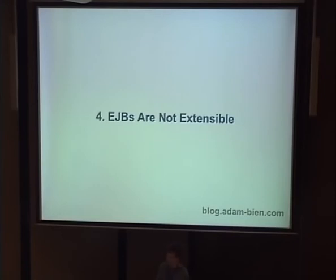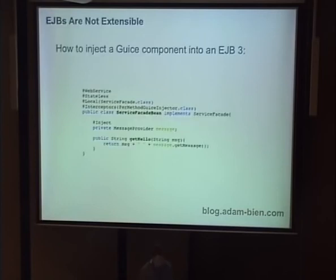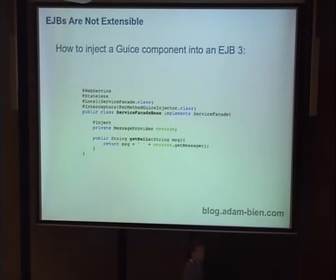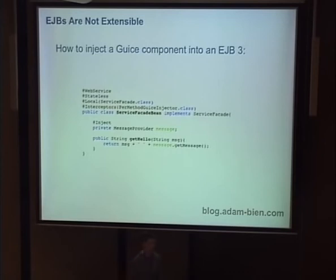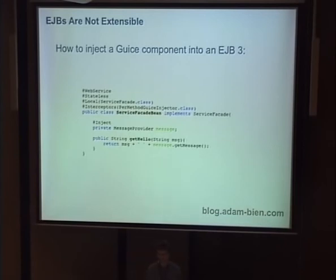EJBs are not extensible. Do you know Guice? Guice is a very cool framework. I like it because Guice is even smaller than EJB — 324 kilobytes — and the whole spec from Guice is 23 pages. Something that is 23 pages is simple. But Guice does not come with transaction support and stuff like this, so we need extensions in Guice to do that. But Guice as dependency injection is really great. What I thought is: okay, I have one EJB — service facade bean — and I would like to inject a message provider. You see the strange annotation, at-inject — it has nothing to do with EJB, it's a Guice annotation. So I would like to inject Guice beans into EJBs, just as a proof of concept.